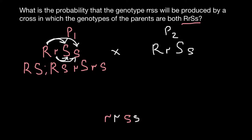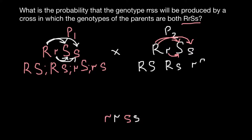We can divide them. And now, as you see, the same rule applies here — we would have four variants here as well: capital R and capital S; capital R and small s; third variant, small r and capital S; and the last variant, small r and small s.